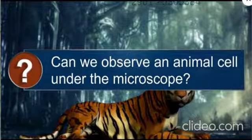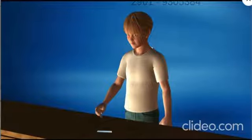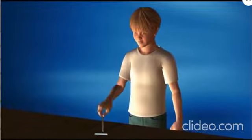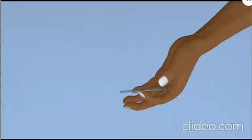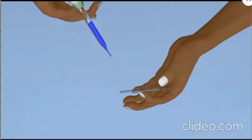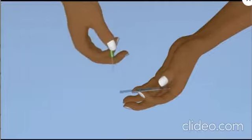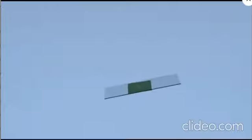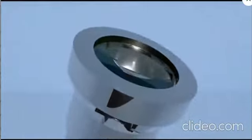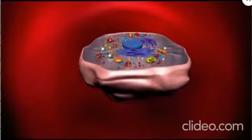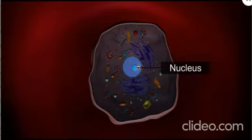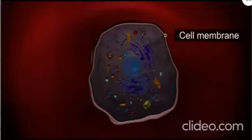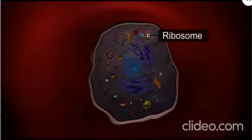Can we observe an animal cell under the microscope? To do so, collect a human cell by gently scraping the inside of the cheek using a toothpick. Place the scraping on a slide and add a drop of water to it. Then add a drop of methylene blue and place a cover slip over it, making sure no air bubbles form. Place it on the stage and observe it through the microscope. We can observe many organelles, such as the nucleus, mitochondria, cell membrane, Golgi bodies, and ribosome.